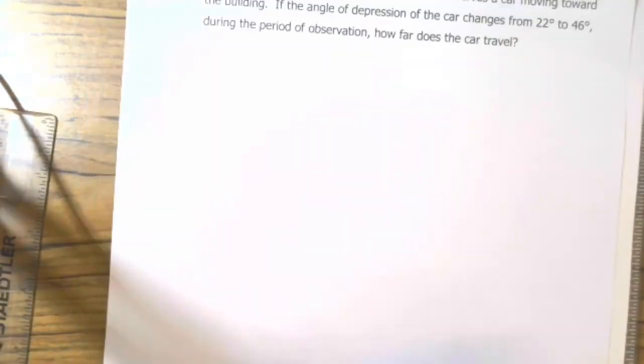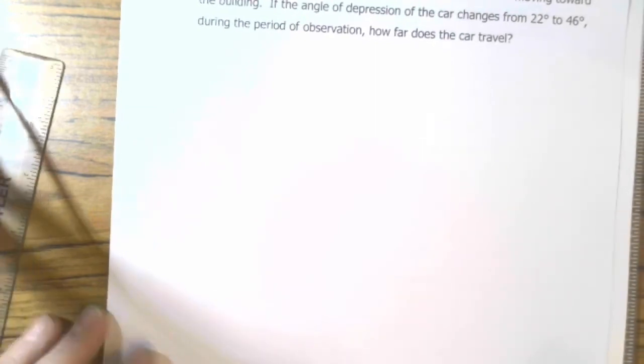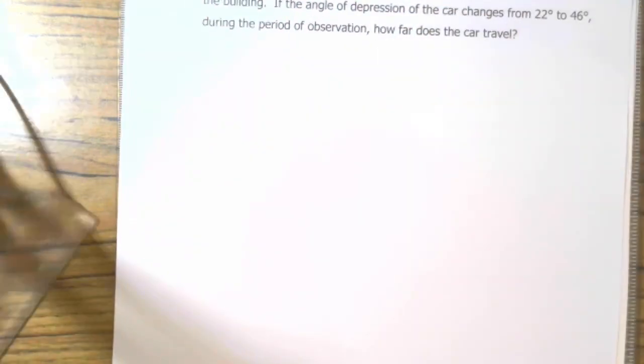Alright. Flip the page. Last one. From the top of a 100 foot tall building, a man observes a car moving toward the building. If the angle of depression of the car changes from 22 to 46 degrees during the period of observation, how far did the car travel?